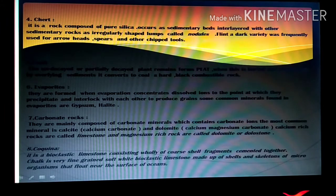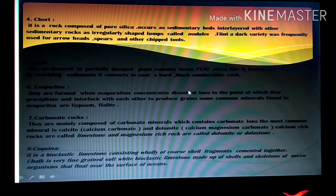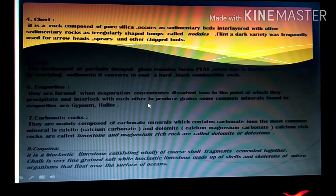Next comes the category of evaporites. They are formed when evaporation concentrates dissolved ions to the point at which they precipitate and interlock with each other to produce grains. Some minerals found in evaporites are like gypsum and halite.